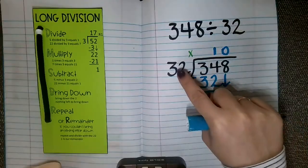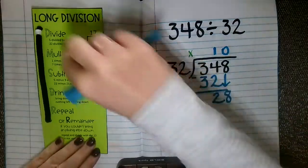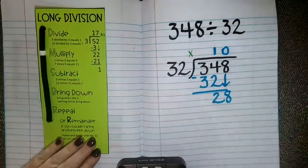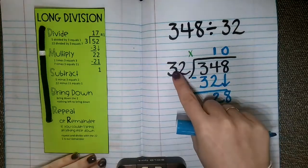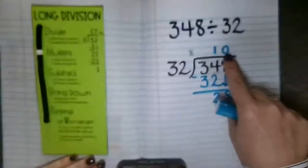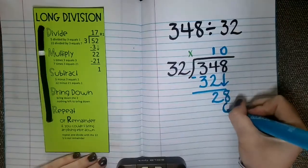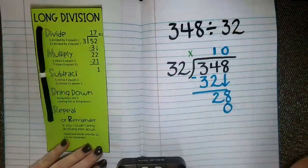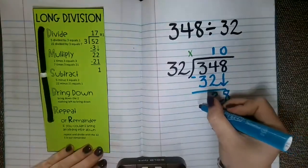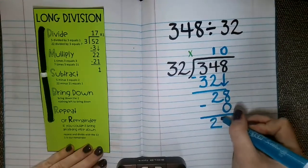So I just divided. I just said that 32 went into 28 zero times. So I'm going to move my division slider, and my next step again is just to multiply. So I'm going to take 32 times the 0 that we just put up there. 32 times 0 is 0. I'm going to subtract. 28 minus nothing is 28.